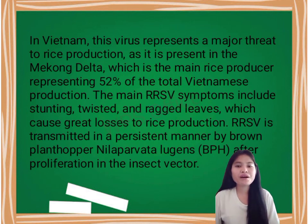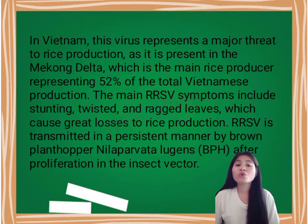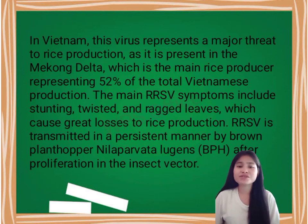The main Rice Ragged Stunt Virus symptoms include stunting, twisted, and ragged leaves, which cause great losses to rice production.